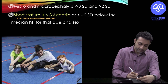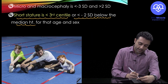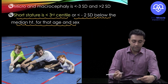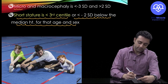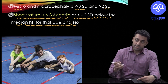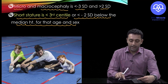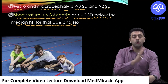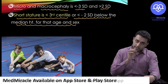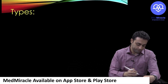Short stature is defined as height less than the third centile or less than minus two standard deviations below the median height for age and sex. For comparison: microcephaly is less than minus three SD, macrocephaly is more than plus two SD, and short stature is less than the third centile.